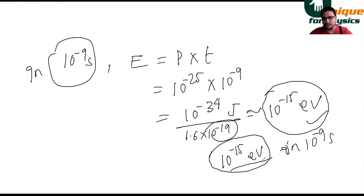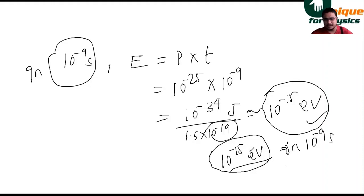10⁻¹⁵ electron volt is an extremely small amount of energy — far too little for an electron to escape the surface, which requires several electron volts. Therefore, you cannot explain the ejection of electrons using classical electromagnetic theory. We discard the wave theory to explain the photoelectric effect. Only the particle nature of light — the photon theory, or quantum physics — can properly explain the photoelectric effect.